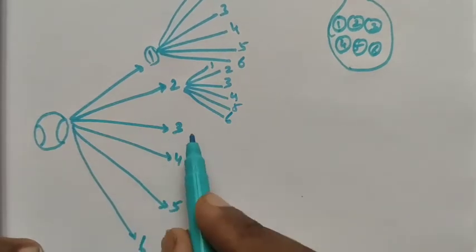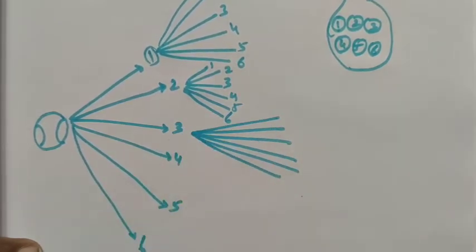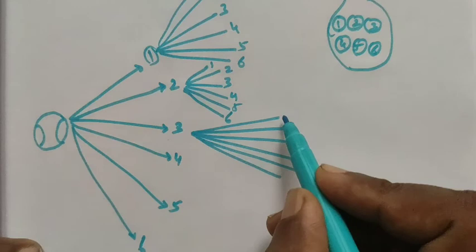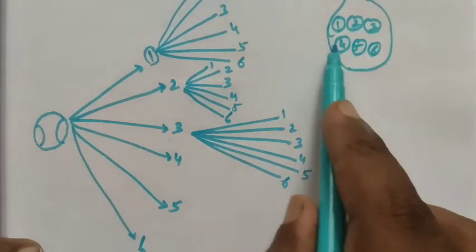If the first ball is number 3, then again I take the second ball. The possible outcomes are 3-1, 3-2, 3-3, 3-4, 3-5, and 3-6.